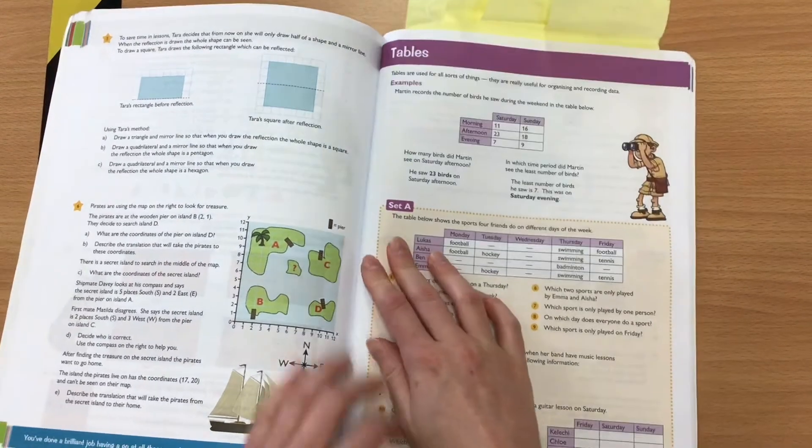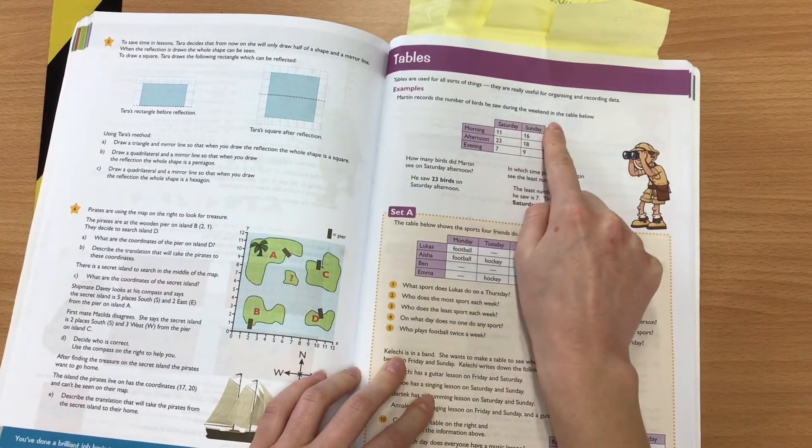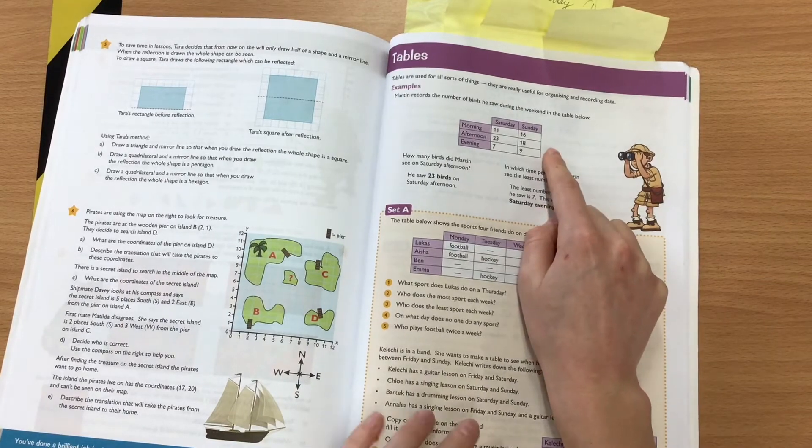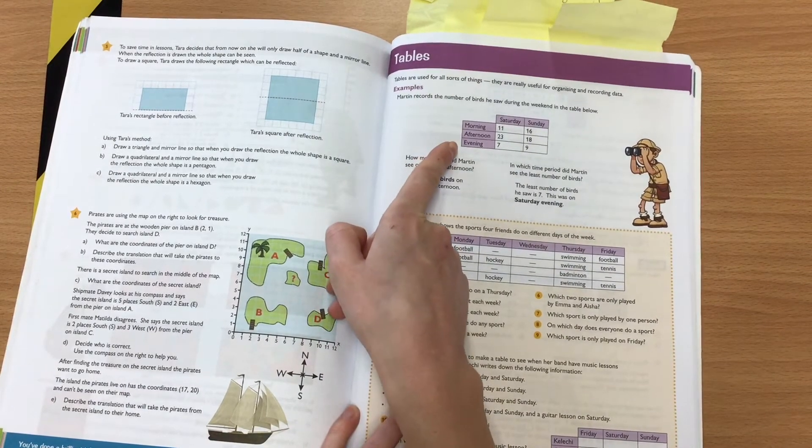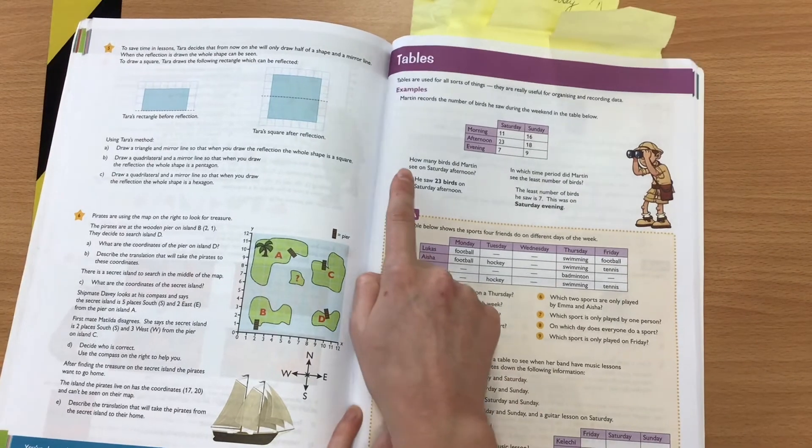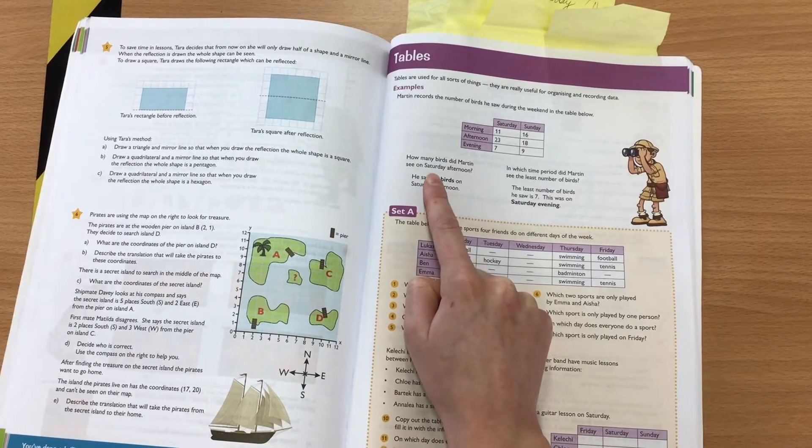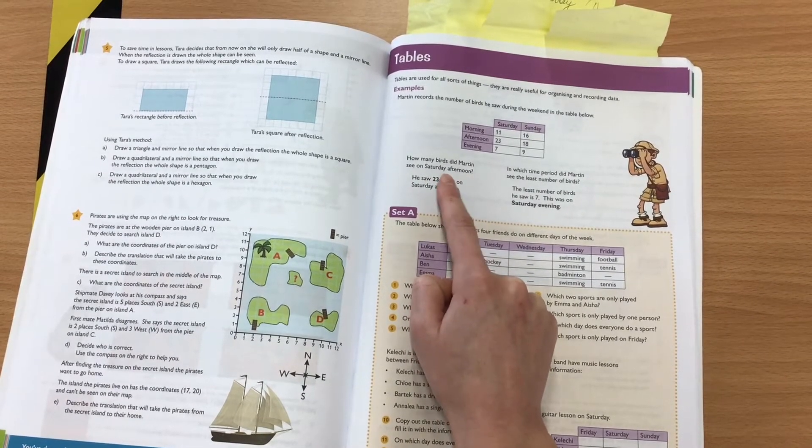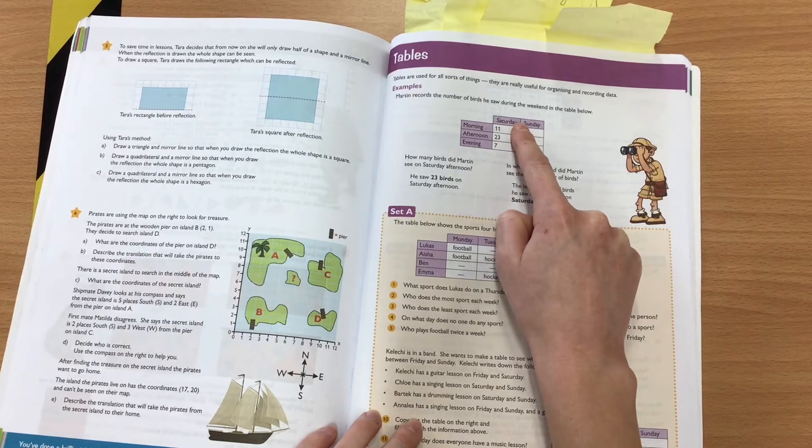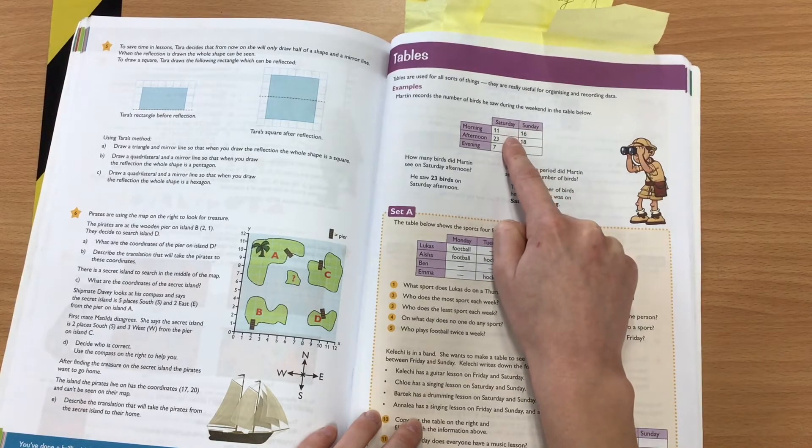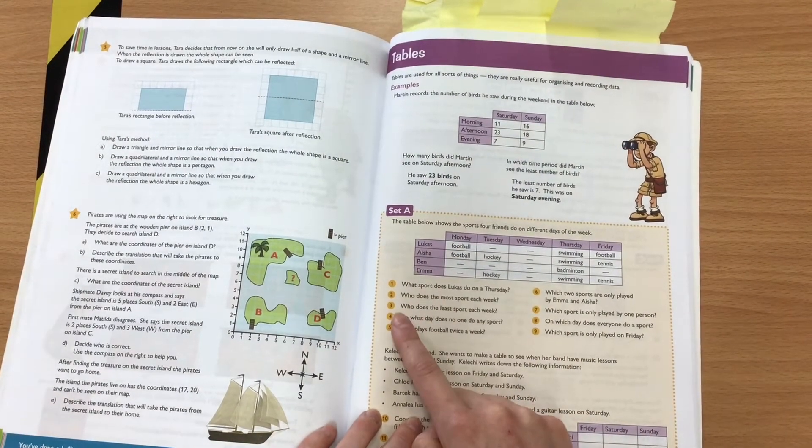So I'm just going to go through the example to start with. It says Martin records the number of birds he saw during the weekend in the table below. So we've got our days, Saturday and Sunday, then we've got morning, afternoon, and evening. So the first question is, how many birds did Martin see on Saturday afternoon? If we want to find out, what we want to do is go along to Saturday, and then we're going to go down to afternoon, and there we can find that it says 23. So he saw 23 birds on Saturday afternoon.